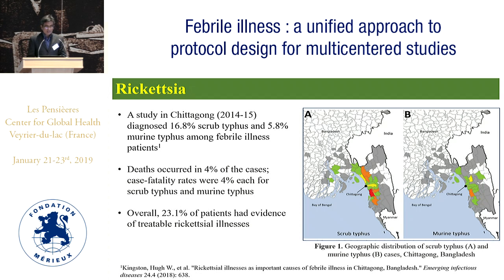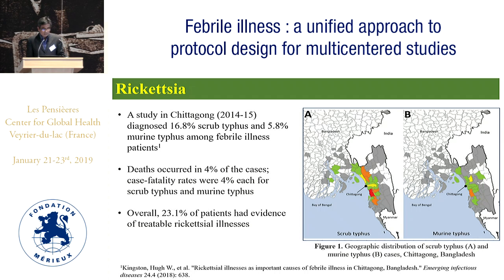A study in Chittagong between 2014 and 2015 diagnosed 16.8 percent scrub typhus and 5.8 percent murine typhus among febrile illness patients. During that time, 4 percent of cases had case fatality for scrub typhus and murine typhus. Overall, 23.1 percent of patients had evidence of treatable rickettsial illnesses. The right-hand map shows the distribution of scrub typhus and murine typhus cases in the Chittagong area of Bangladesh.